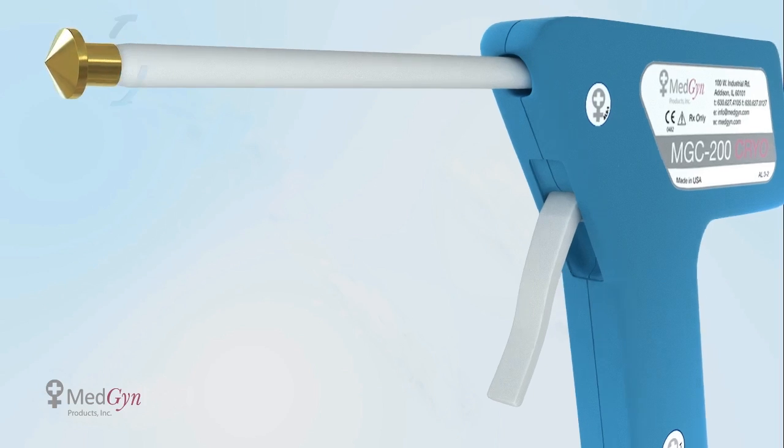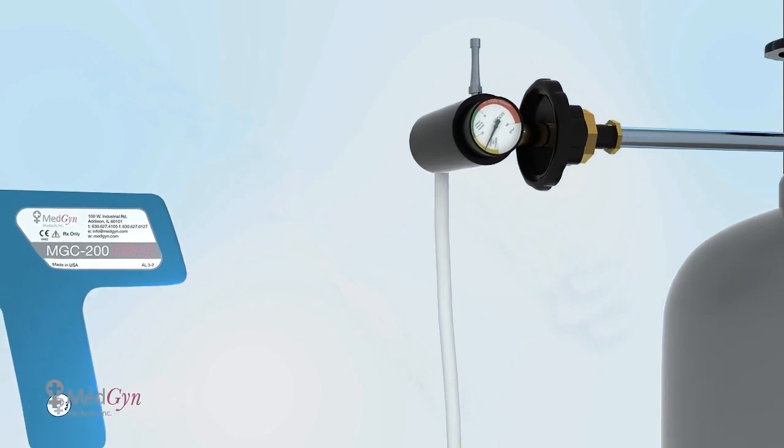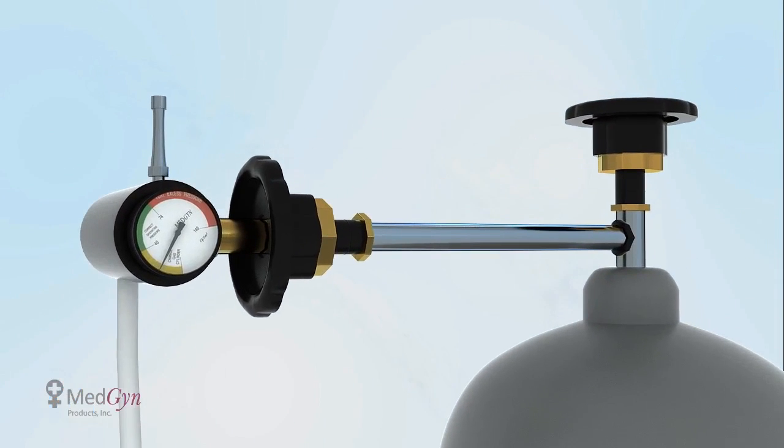Next, connect the pressure gauge to the gas tank. Slowly open the valve on the gas tank. Make sure you verify the pressure on the pressure gauge.